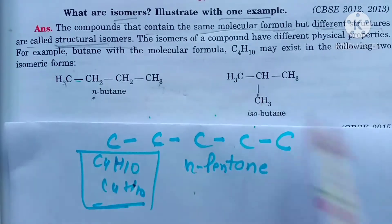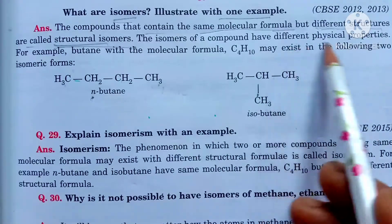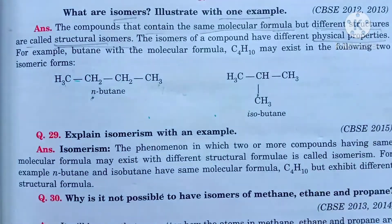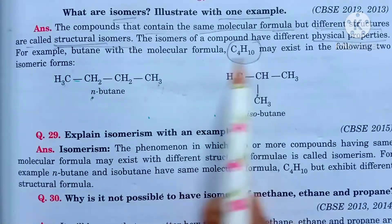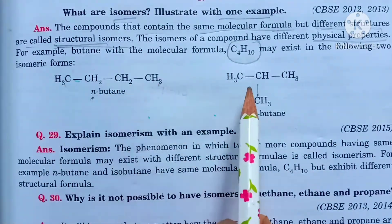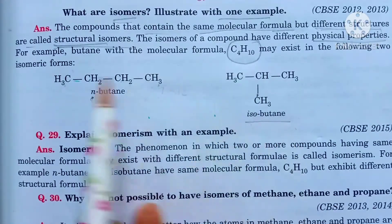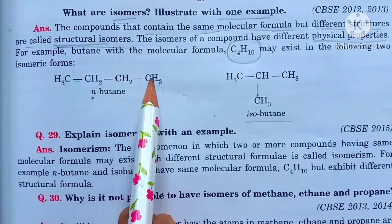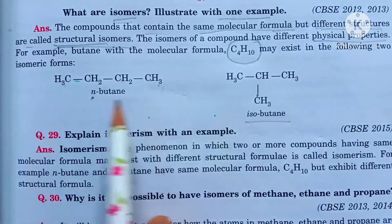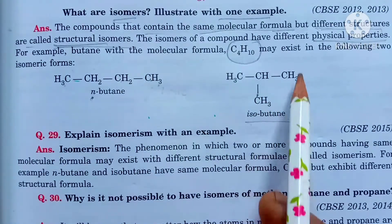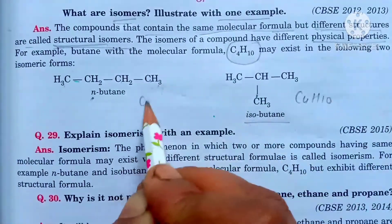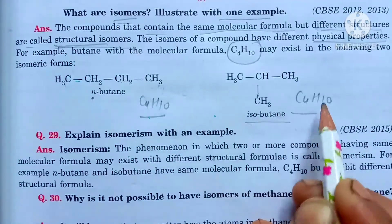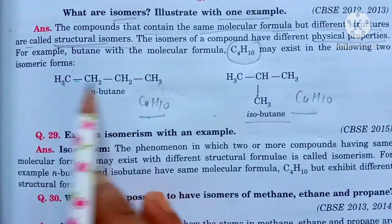These are also called structural isomers, which can differ in physical properties. If we have C4H10, we can create n-butane as a straight chain, and also isobutane. Both are C4H10 — the molecular formula is the same but the structure is different.